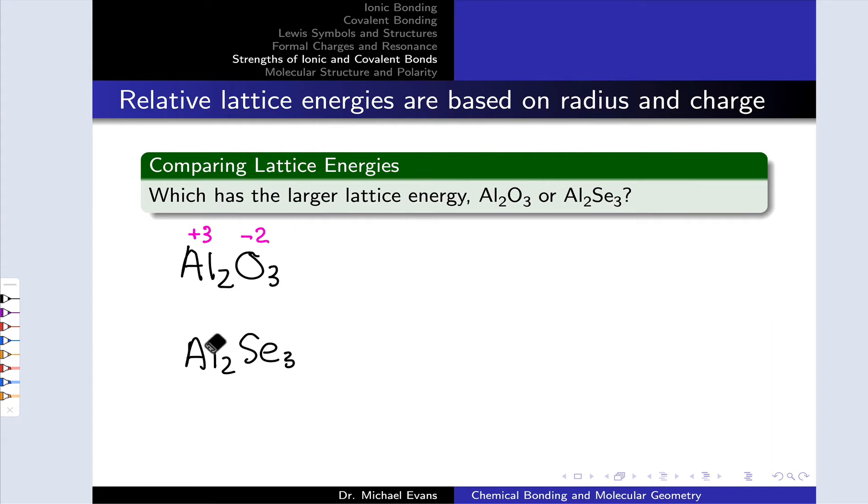And in fact, if we think through Al₂Se₃, we'll realize that we have the exact same ionic charges in this compound as well, +3 on the aluminums and -2 on the selenide ions. So to appreciate the difference between these, we need to think about the radii and the ionic sizes. Selenium and oxygen are both in group 16. Selenium is further down on the periodic table, so it is larger than oxygen, even as a -2 anion.